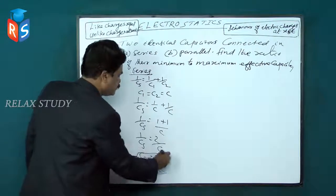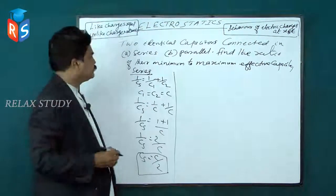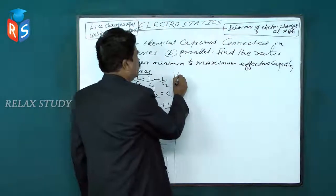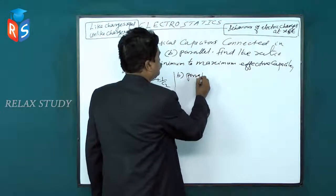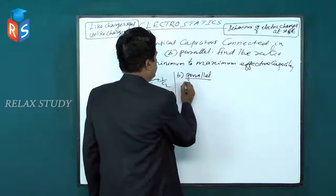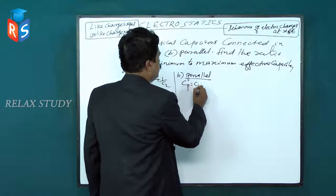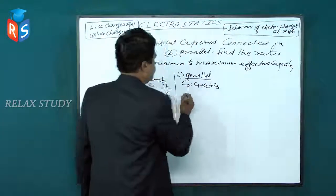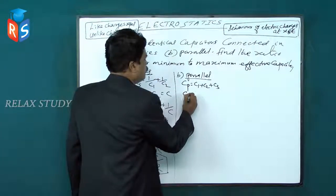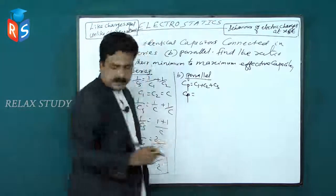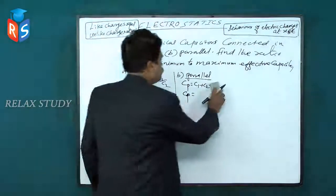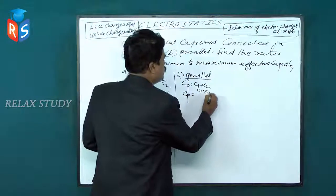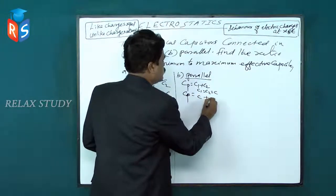So in series, Cs = C/2. In parallel, Cp = C1 + C2 + C3. Here it is two identical capacitors, therefore Cp = C1 + C2 = C + C, so Cp = 2C.